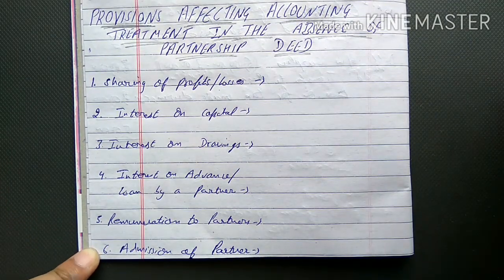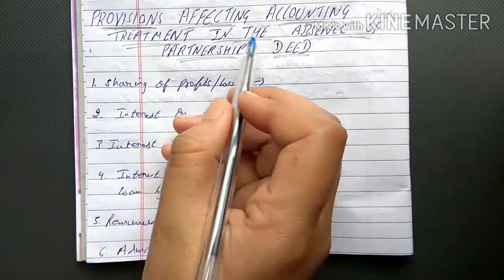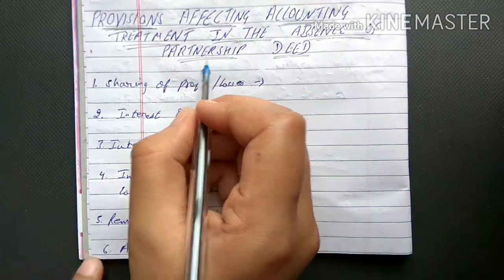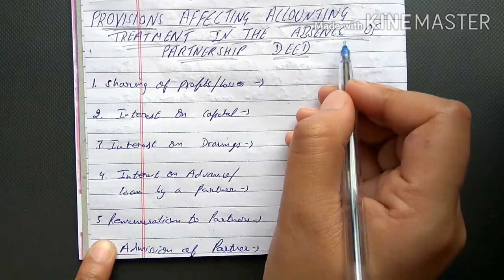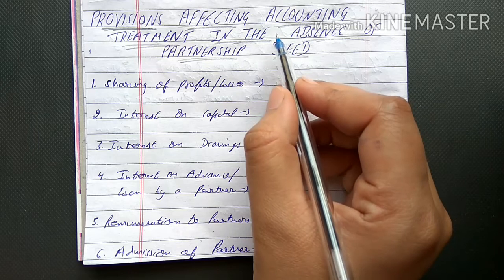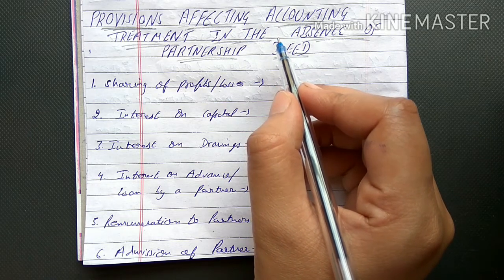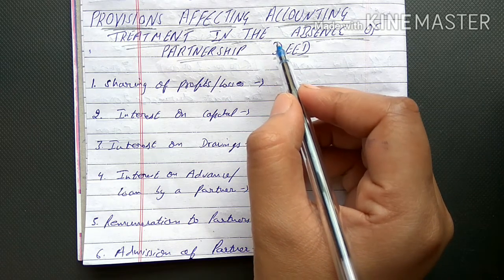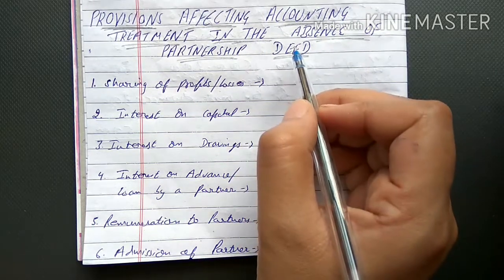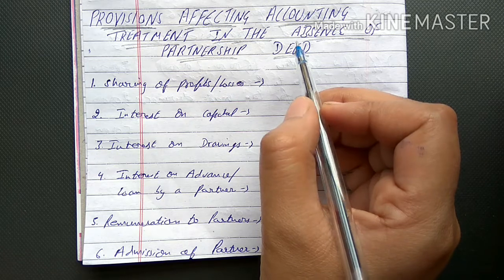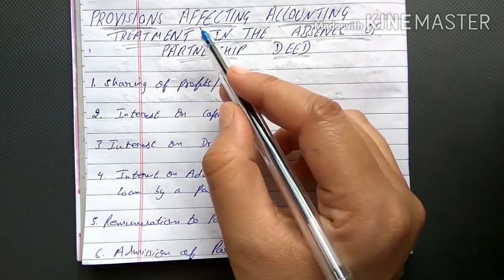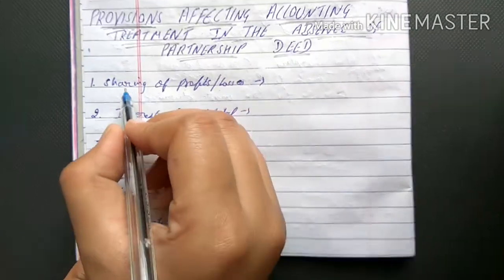This is a very important topic and all numerical problems will be based on this. The topic is: provisions affecting accounting treatment in the absence of a partnership deed. If a deed has been made, it is fine. If no deed has been made, the Indian Partnership Act 1932 applies. Let us now read what is written in that act and what its provisions are.